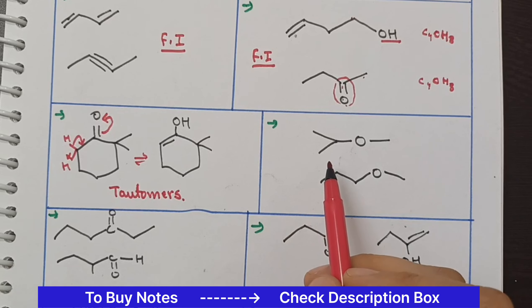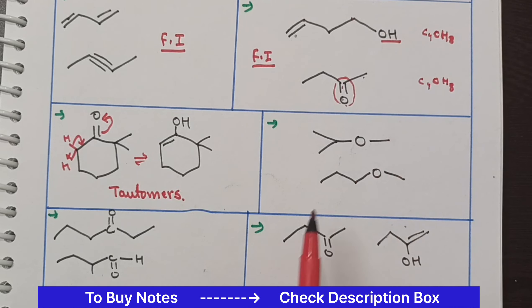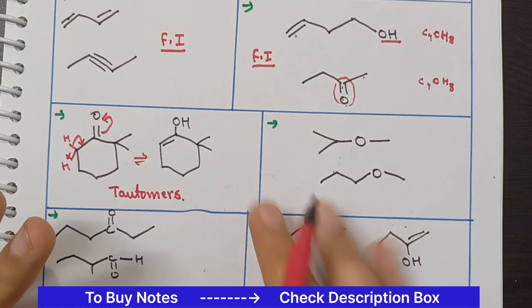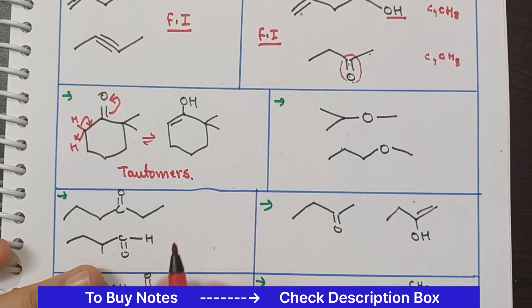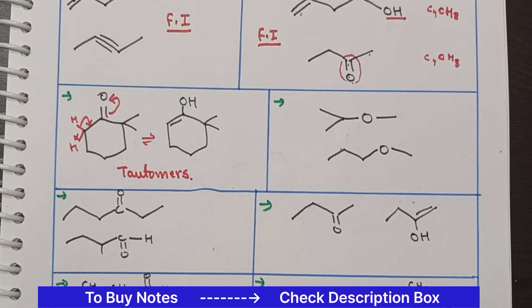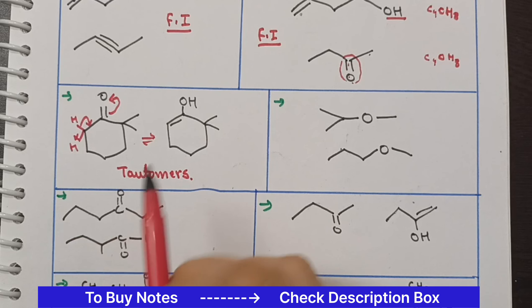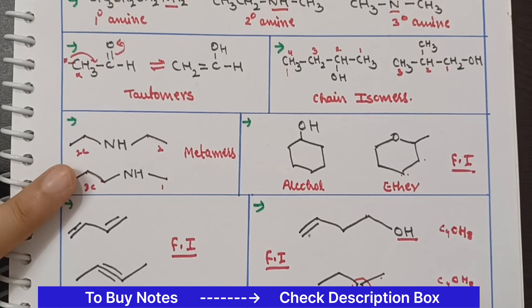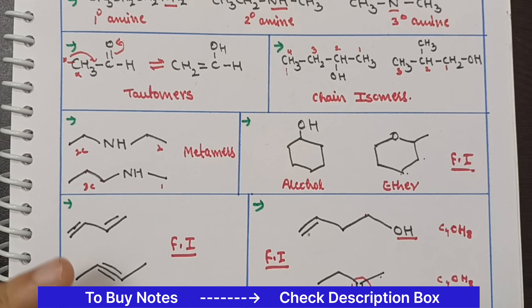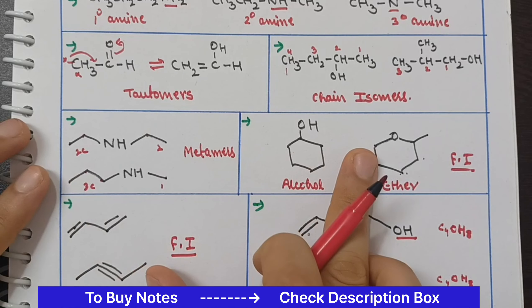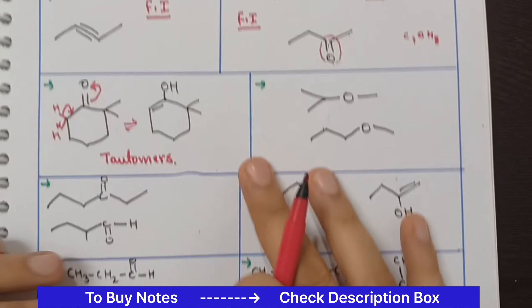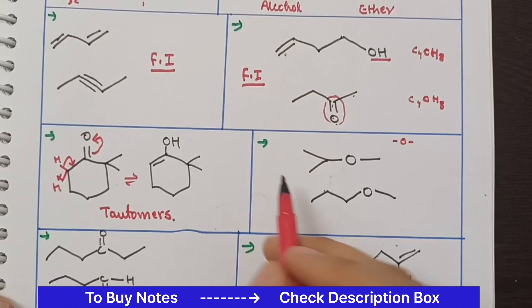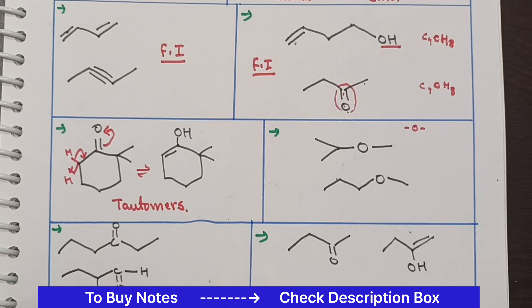Now let's see this example. The molecular formula has 5 carbons on each side, the oxygen is the same, and the hydrogens are the same — molecular formula is the same. Now here is an ether. The trick I told you: if there is a double bond with OH, go to tautomers. For metamerism: the functional groups are the same (both are ethers, oxygen with alkyl connectivity on both sides). Looking at the alkyl groups, here are 3 carbons on one side and 3 carbons on the other.